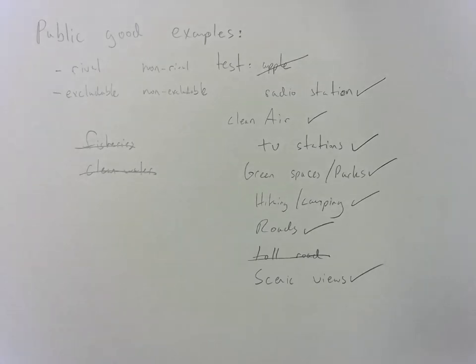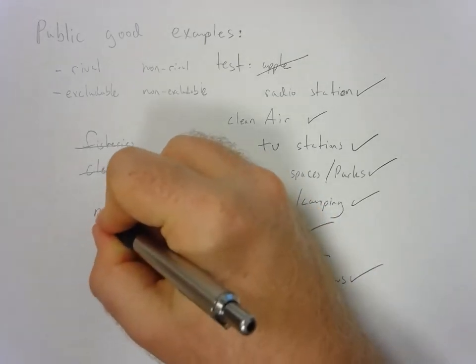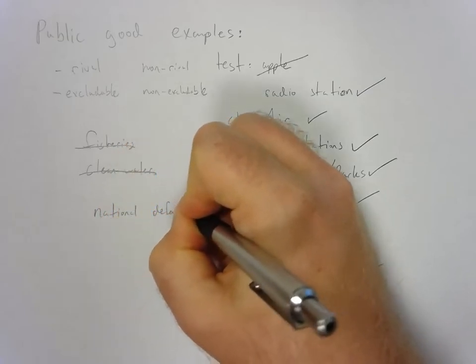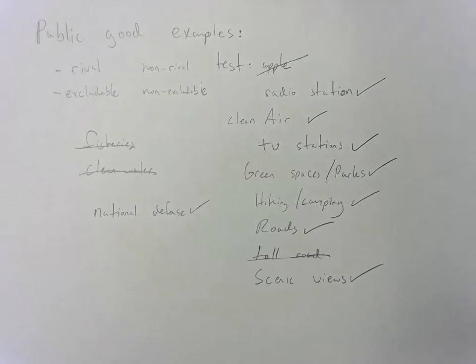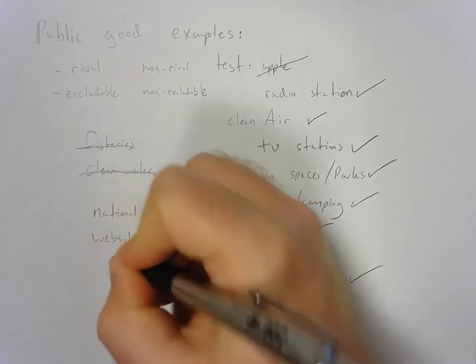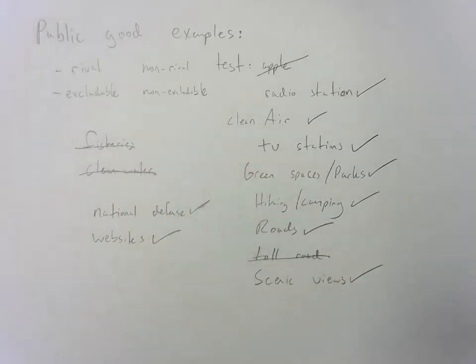Other examples are things like national defense. As long as you're within your country, you're going to be defended by them. When I'm defended, other people will also be defended. Websites like this one or Wikipedia are classic examples of public goods.